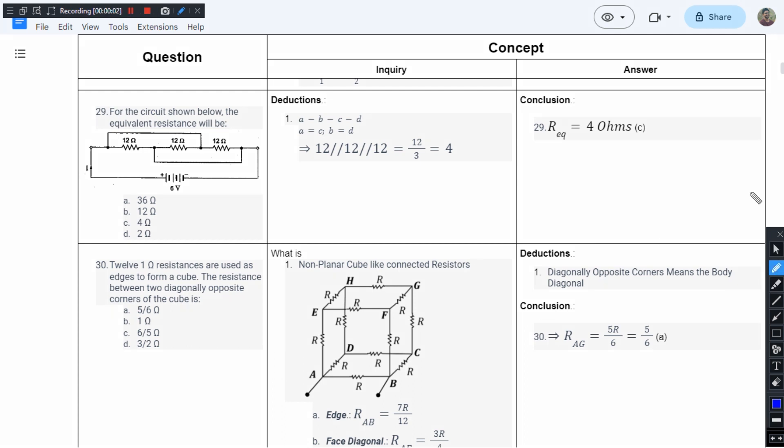This is the 29th question from chapter 1 of JB Gupta's book. The question says: for the circuit shown below, the equivalent resistance will be.